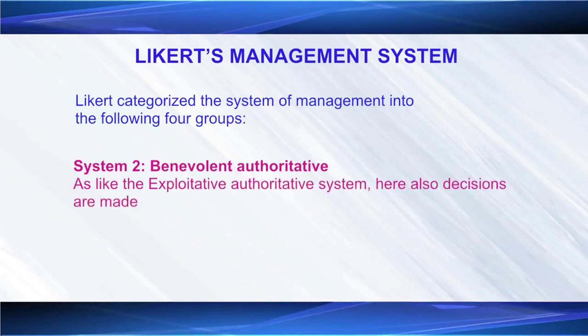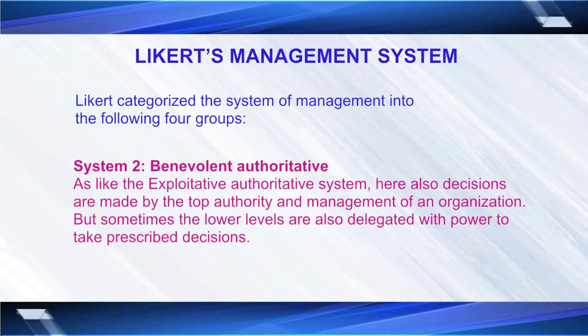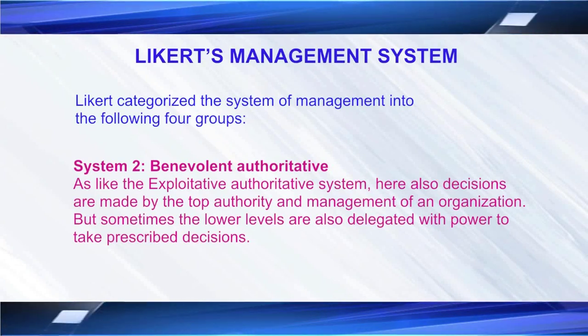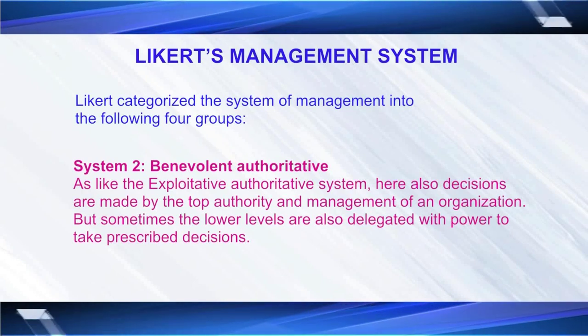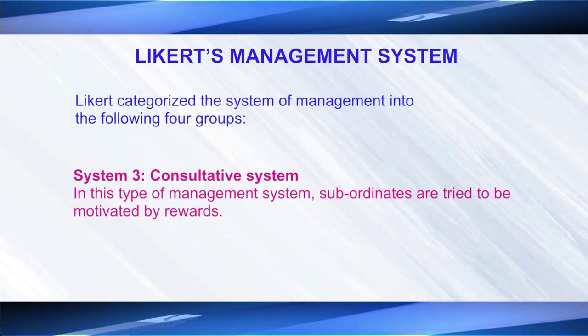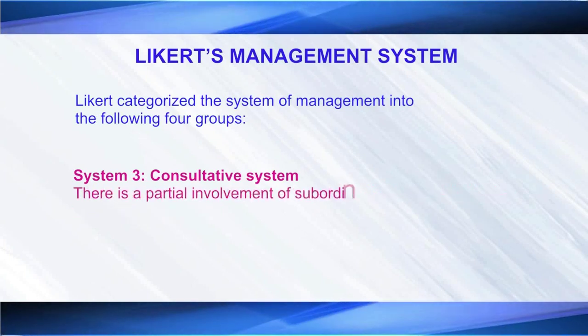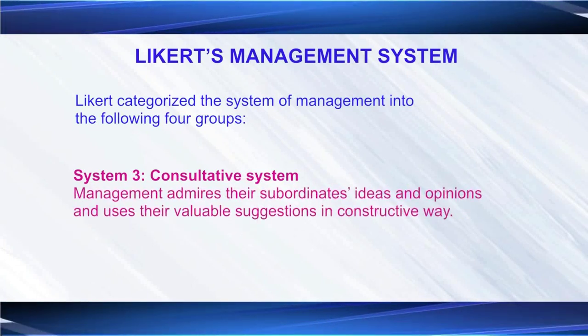System two is benevolent authoritative. This system is similar to exploitative authoritative in that management takes decisions by their own and imposes them on subordinates, but in some cases they also ask subordinates for input. System three is consultative: under this system the management asks subordinates for input in the decision-making process. Subordinates are motivated by reward instead of punishment, and rewards are provided to those who perform better. There is partial involvement of subordinates in decision-making.